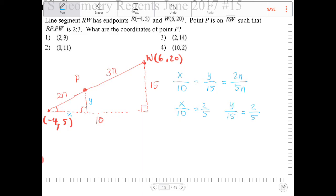So now I have enough information to solve for x and solve for y. I'm going to multiply both sides by 10, and x over 10 is equal to 2 fifths, and if I do, I'll end up with 10 times 2 over 5, which means x is equal to 4. I'm going to do the same thing to solve for y. I'm going to multiply both sides by 15, and if I do, I'll end up with 15 times 2 over 5, which means y will equal 6.